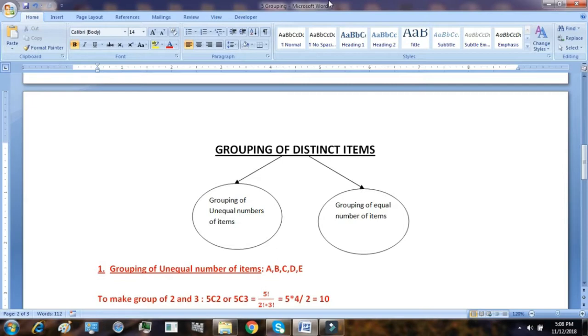Firstly, we will see how to group distinct type of items. This can further be categorized into two, which is grouping of unequal number of items and grouping of equal number of items.